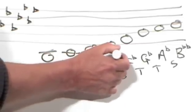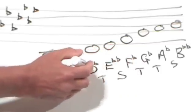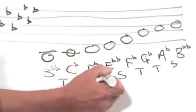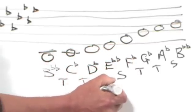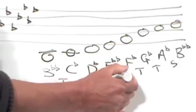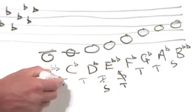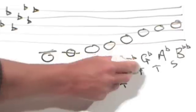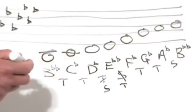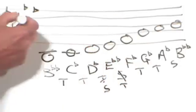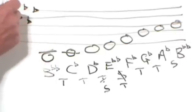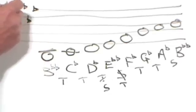So by adding a flat symbol to that E there, giving us E double flat, that shrinks that down to a semitone and expands that at the same time to a tone. And that gives us our tone, tone, semitone, tone, tone, tone, semitone formula. So we'll put an extra flat there on the E line.